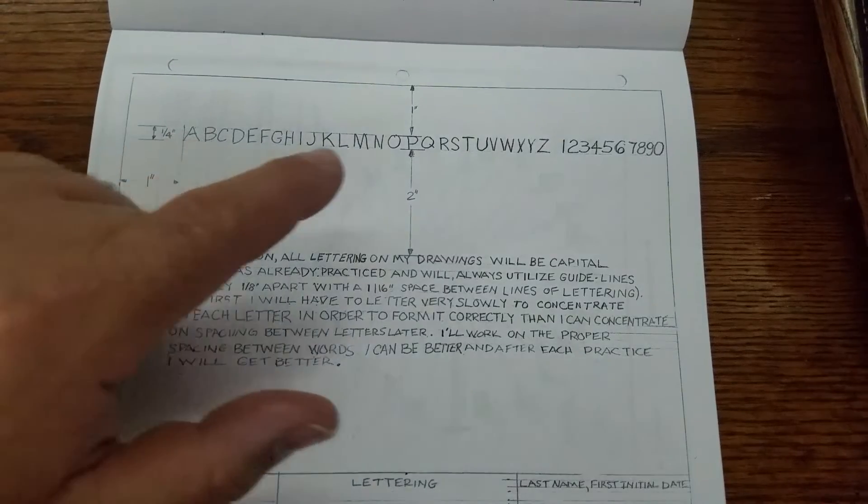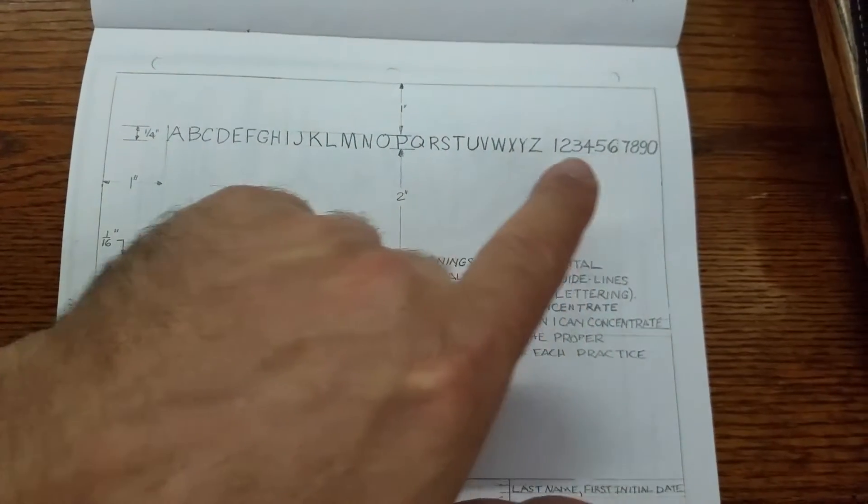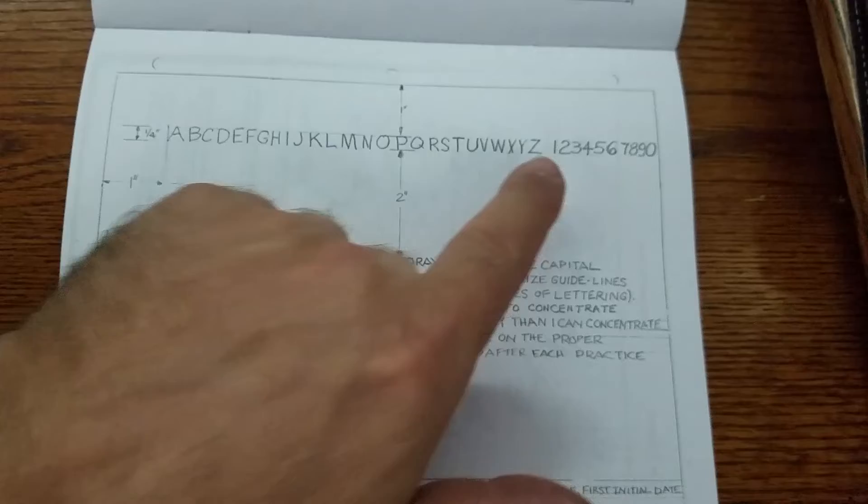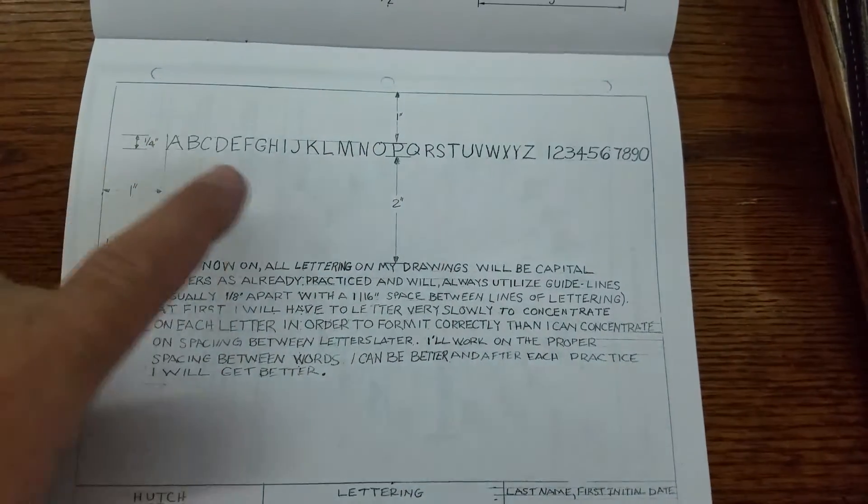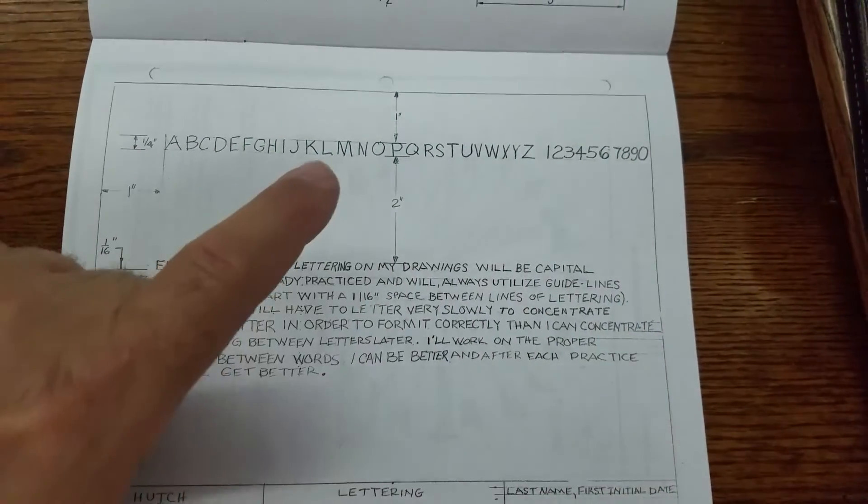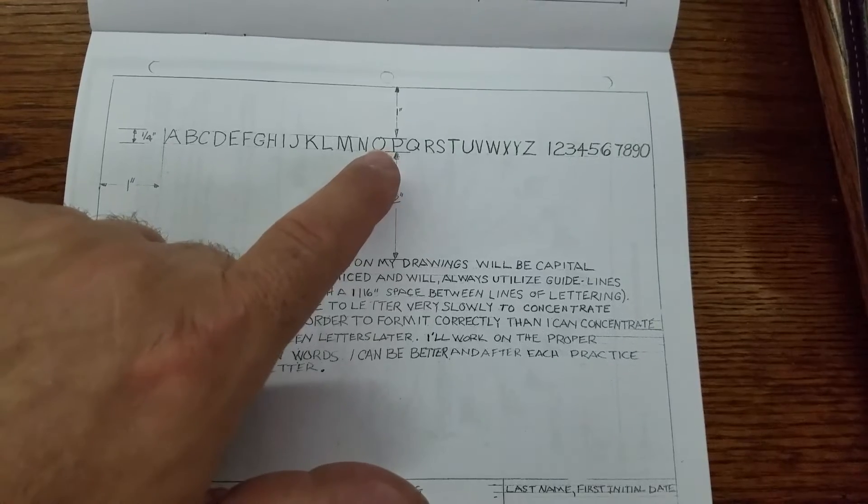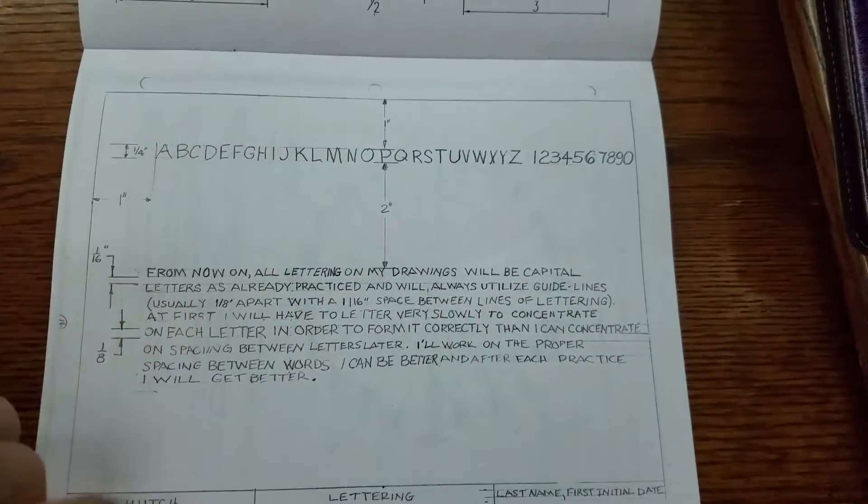You're gonna figure out where the center is of all these letters, counting that space right there. Find the approximate center of this area here and start with your letters going one way or the other way.